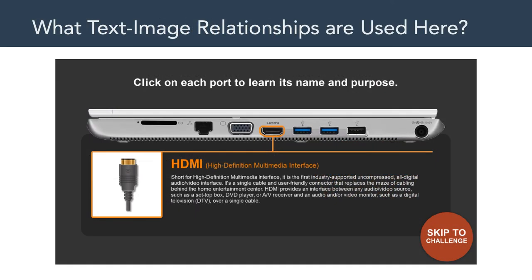So what do these four possible text-image relationships tell us about the using computer ports example? In this example, we're seeing text-image relationships that provide enhancement. For example, in the image on the top we see the letters HDMI printed above one port of the computer, and we see additional text that helps us understand that those letters actually mean something — HDMI stands for High Definition Multimedia Interface. This is an example of an enhancement. I do encourage you to reflect on what's possible in terms of text-image relationships as we move forward this semester.